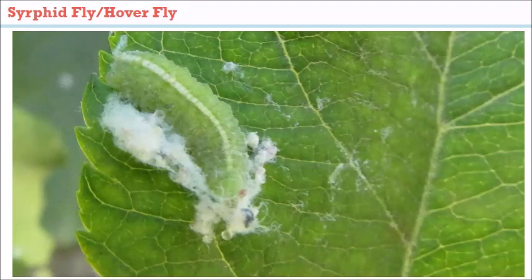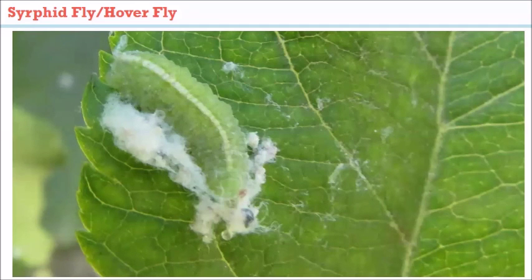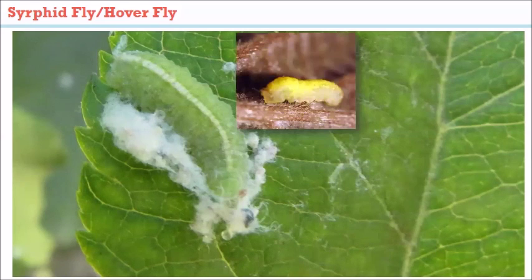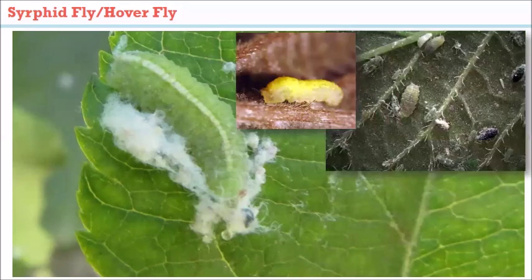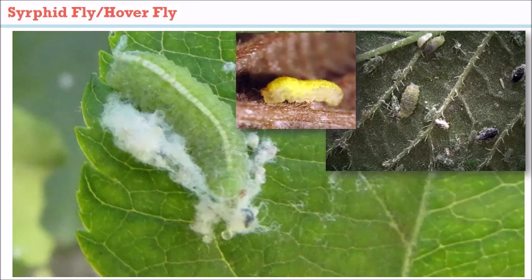Syrphid flies, or hoverflies, are a beneficial you may not recognize even when you're seeing them within a colony of aphids, because they blend in. Here's one munching through some woolly apple aphids — they're kind of a nice green color, though they can also be yellowish. The olive color that blends in with the aphids is most commonly seen.